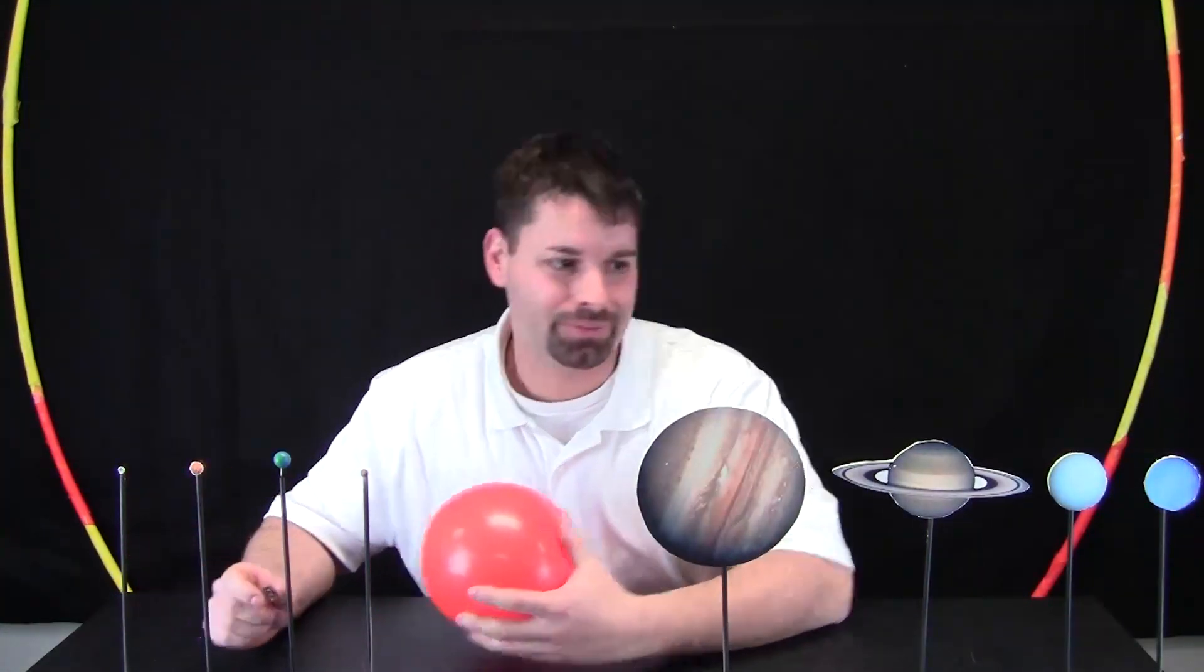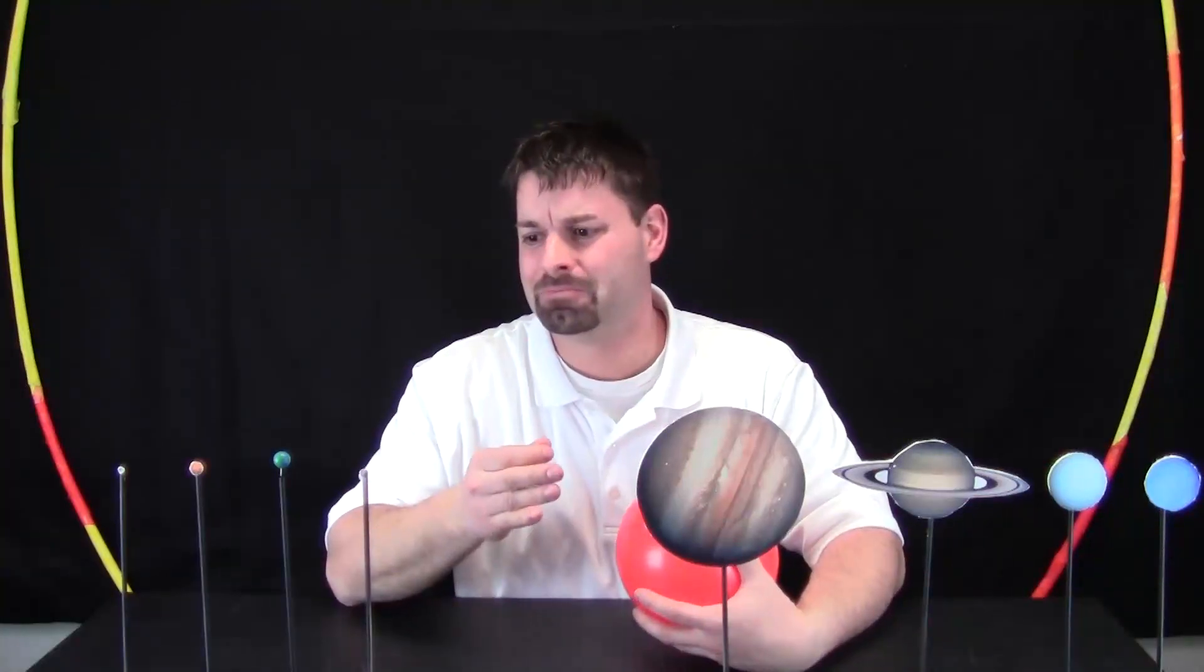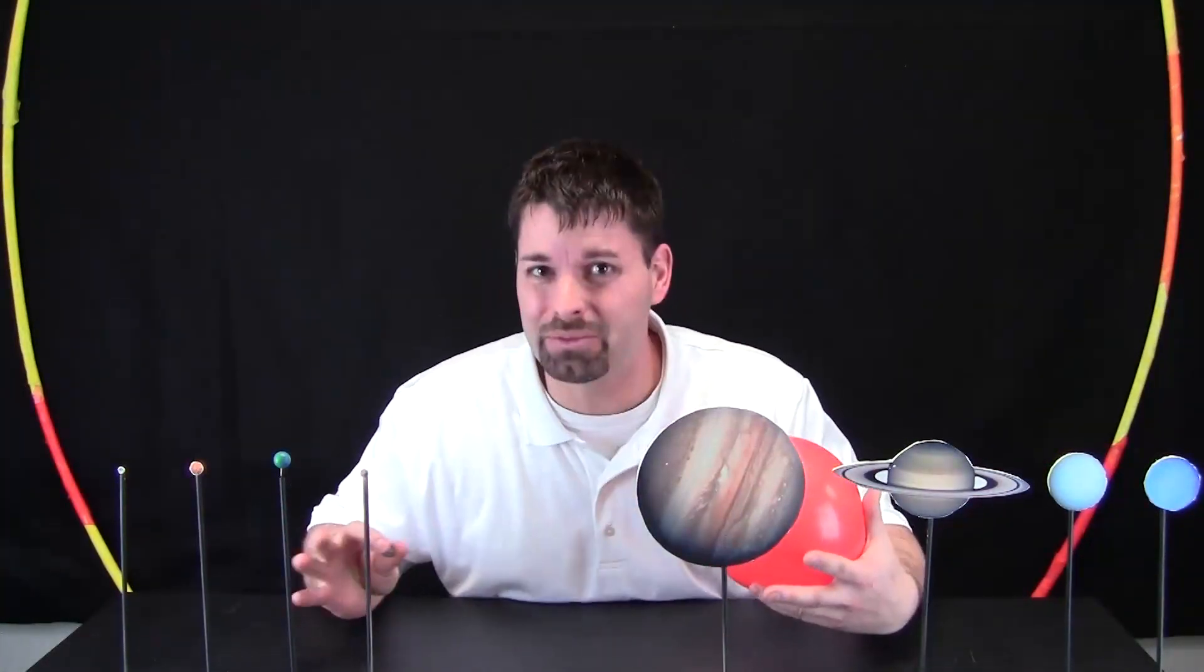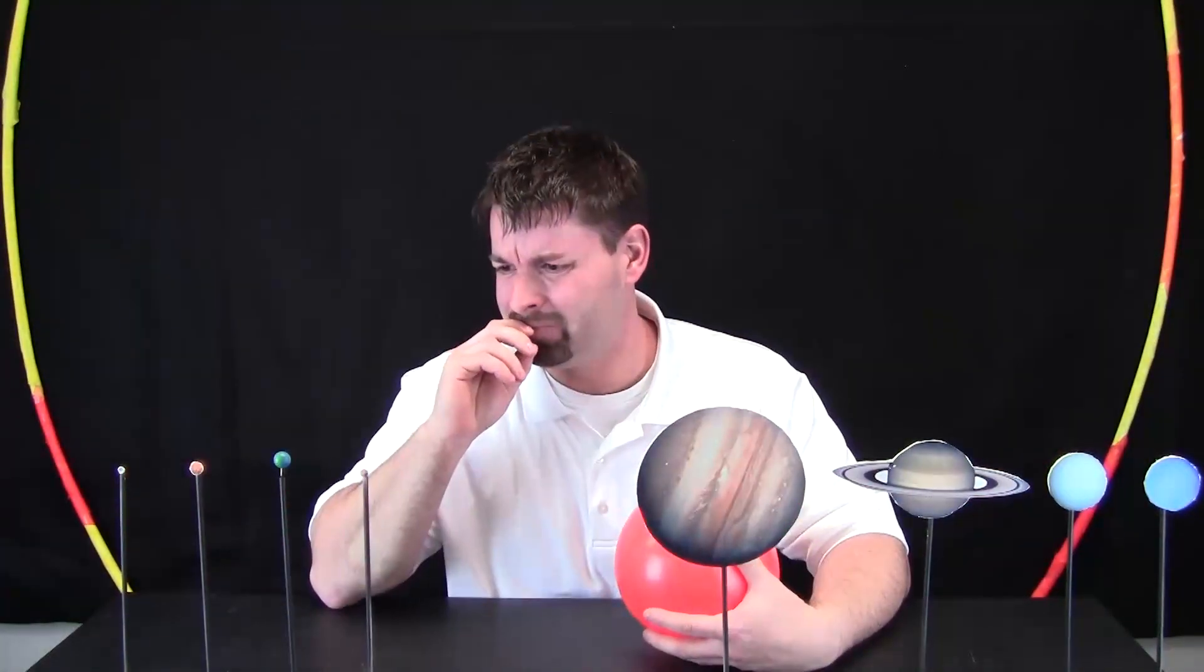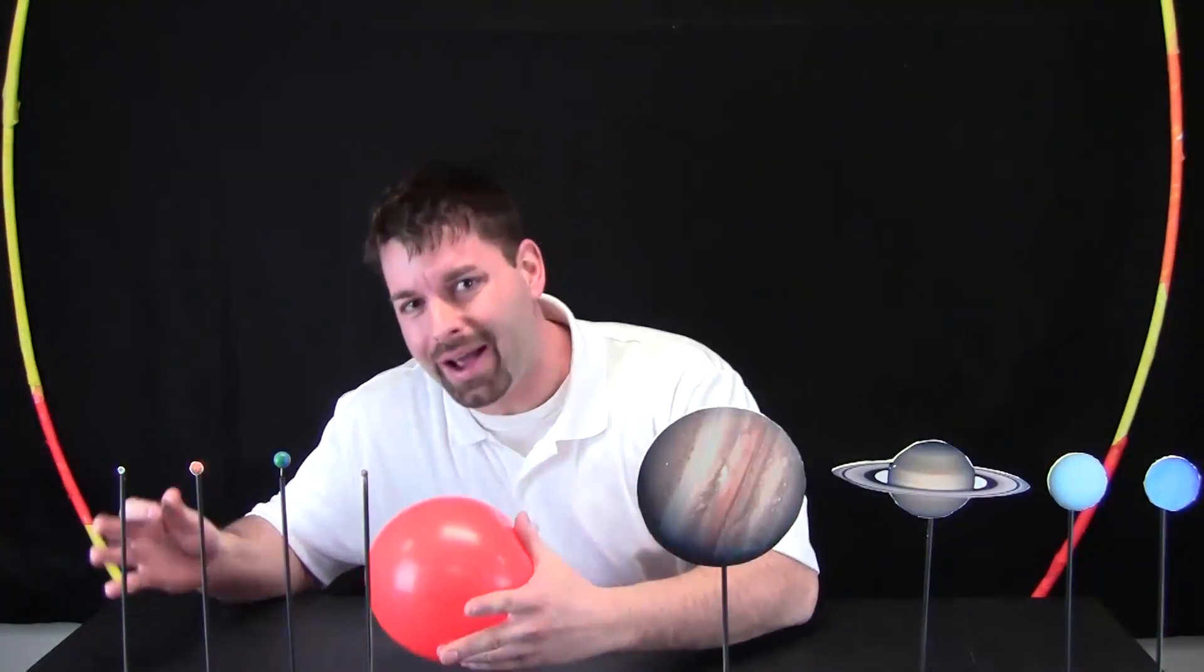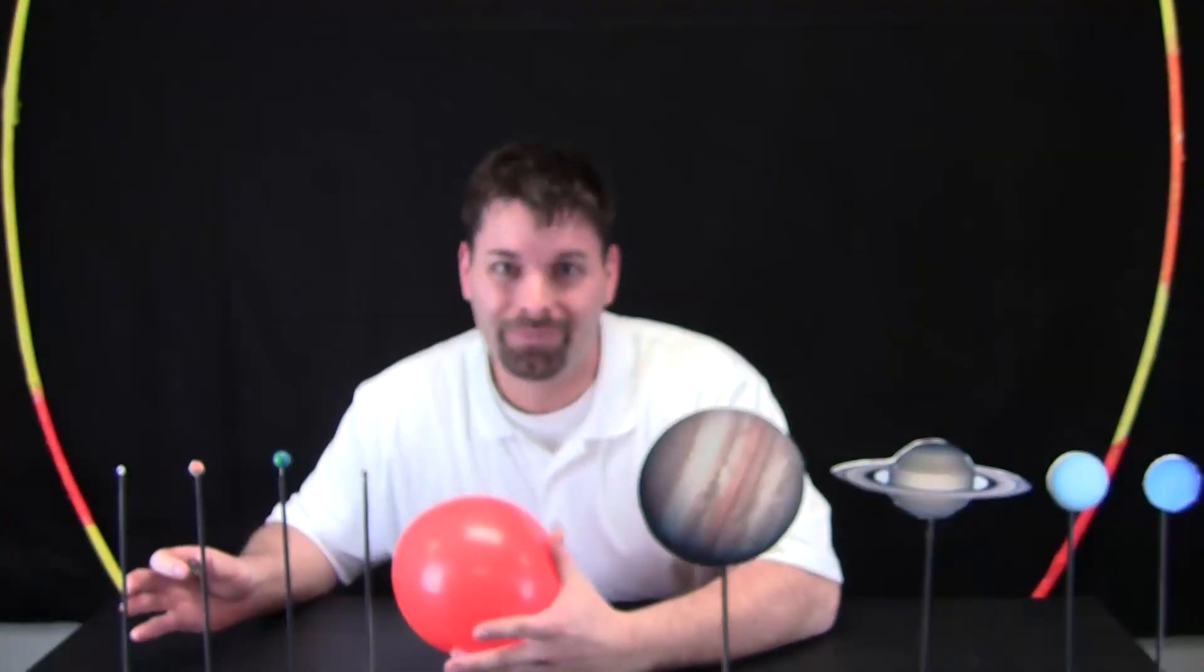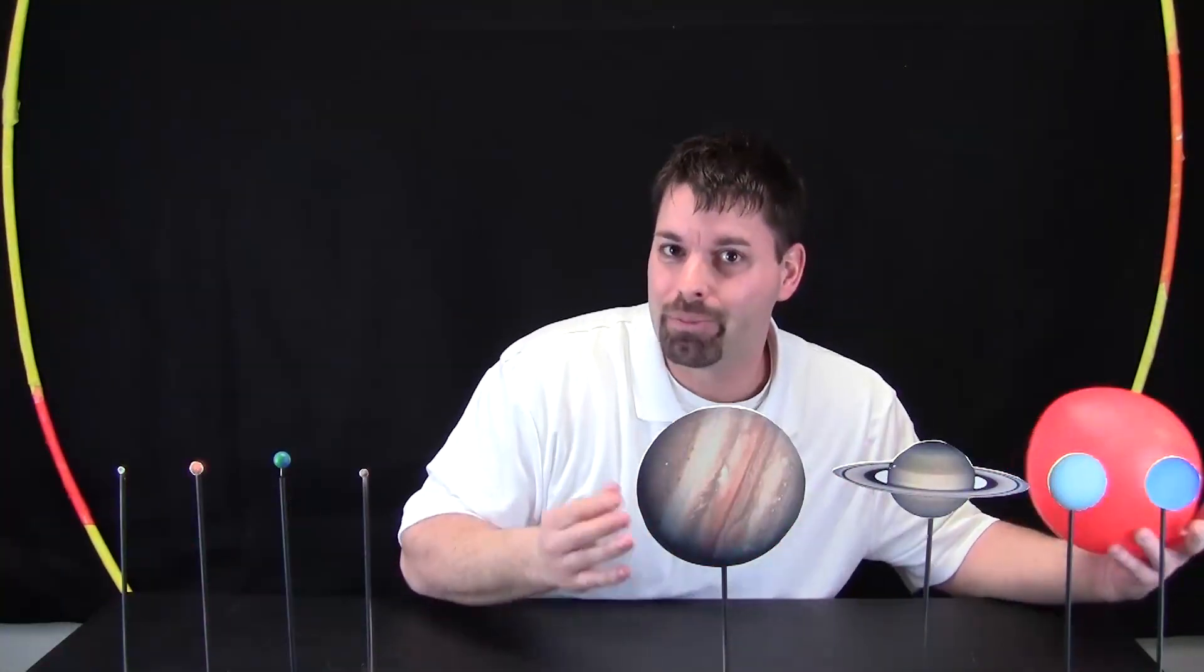We have four inner rocky planets and four outer gas planets. Do you notice anything different about them just by looking at them? Well, the four inner rocky planets are a lot smaller and they are closer to the Sun. The four outer gas planets are bigger and they are further away from the Sun.